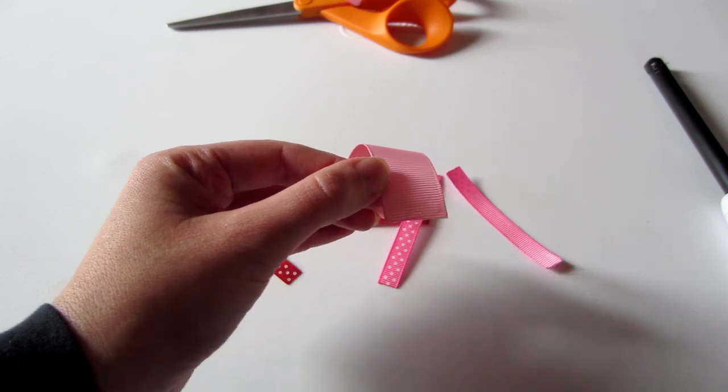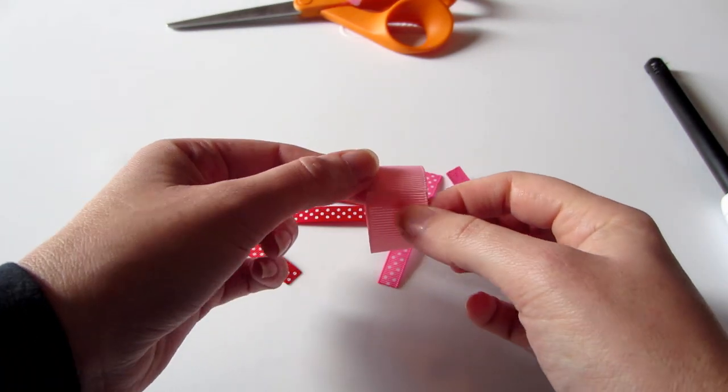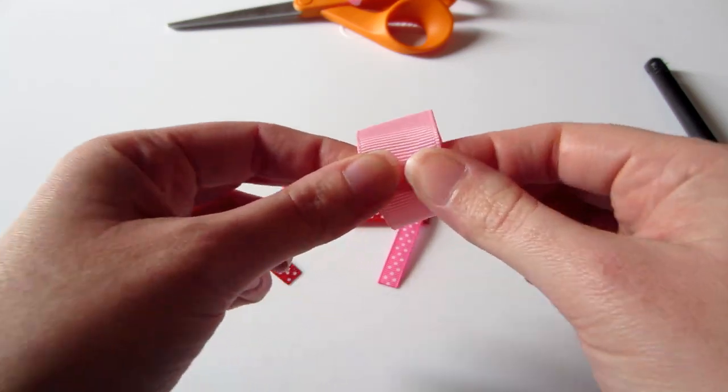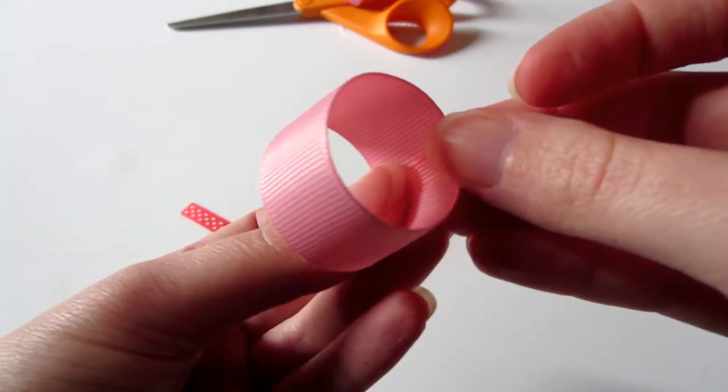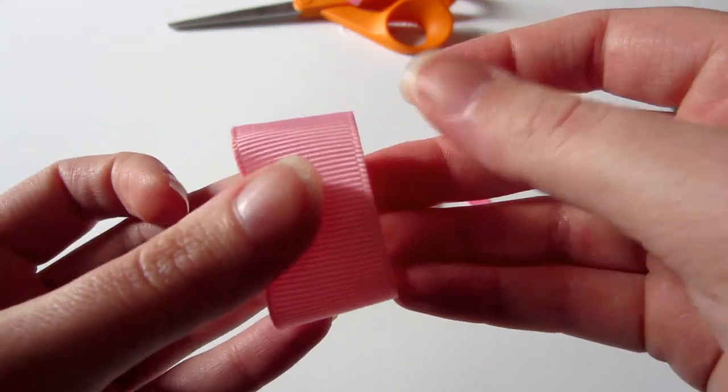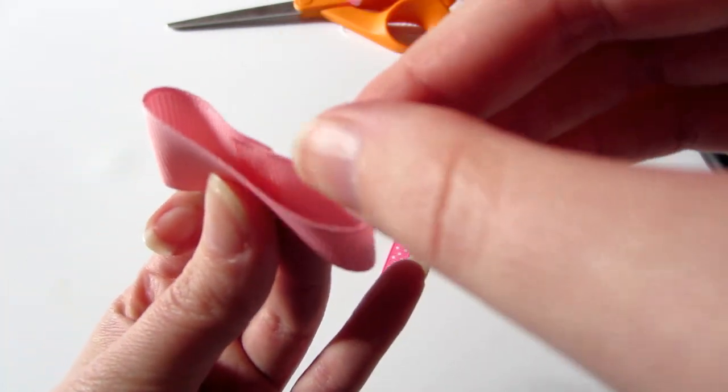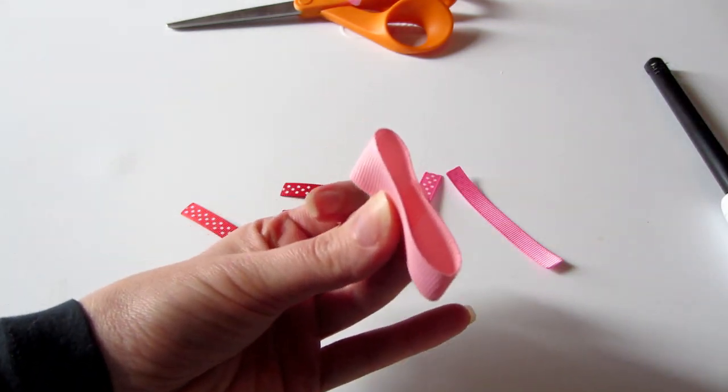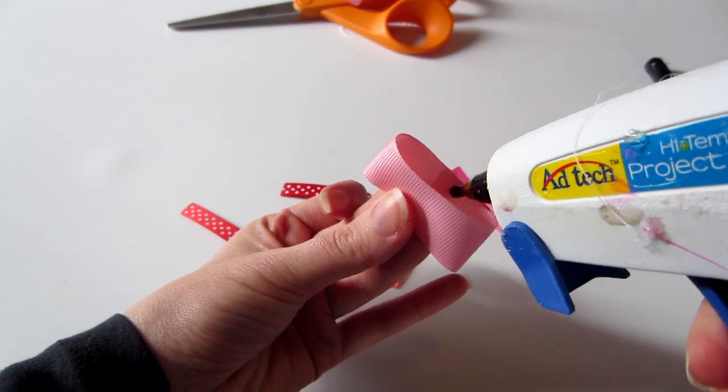Go ahead and connect those two ends. It's now in the shape of a cylinder or a circle. Now all we're going to do is take it and press down in the middle. This is our base and this is what it's going to look like when it's flat. Just add a dab of glue right there in the middle and just press down.